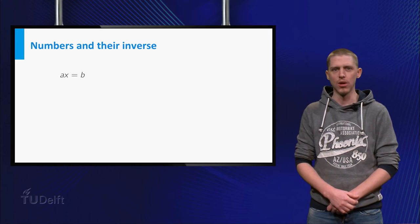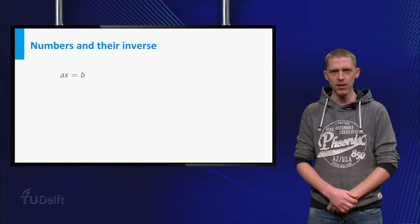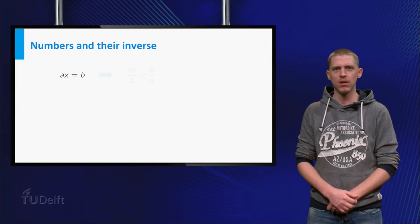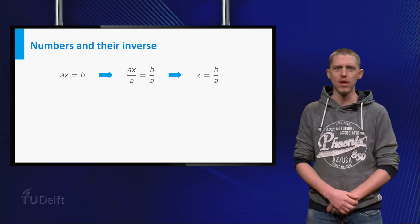Let us first start with normal numbers. If we have an equation Ax is b and want to solve for x, you simply divide both sides by A, but only if A is non-zero.